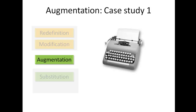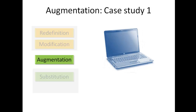Ruben Puentedura, the brains behind this model, used the typewriter as a potential example at Substitution level. At Augmentation level, a similar example would be using a word processor. If a student uses it to type an essay, elements such as the spell checker or cut and paste would move the task up to the Augmentation level — it is a direct tool substitute for writing on paper, but with minor functional improvements like spell checking.